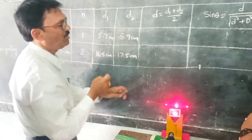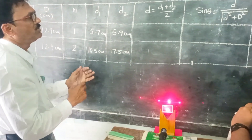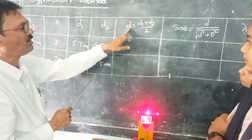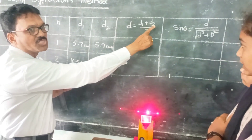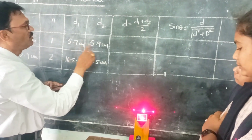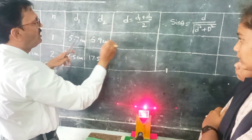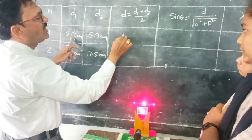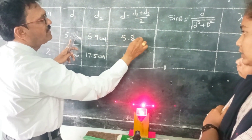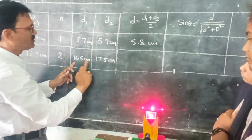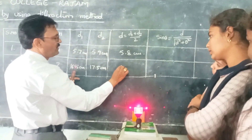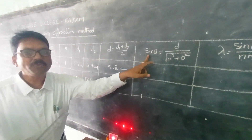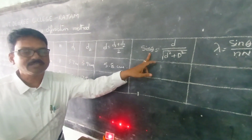Now we calculate the average of the two first-order distances: 5.7 and 5.9, giving an average of 5.8 cm. The average of the two second-order distances is 17.0 cm.